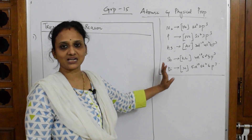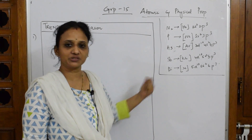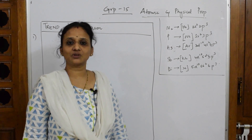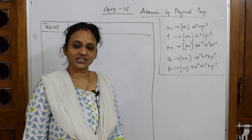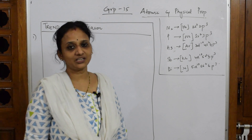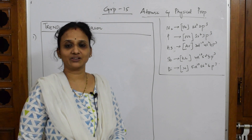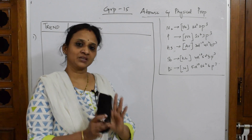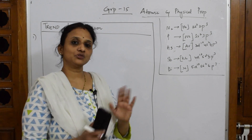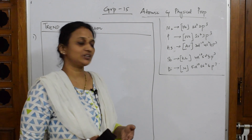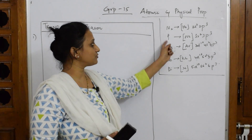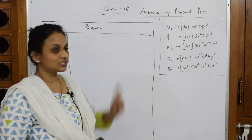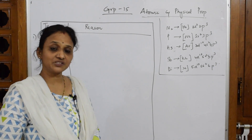In group 15 we have nitrogen, phosphorus, arsenic, antimony, and bismuth. Nobody will ask you in grade 12 what are the elements or what is their electronic configuration at that basic level. Group 15 elements: nitrogen, phosphorus, arsenic, antimony, bismuth — the first important concept is electronic configuration.